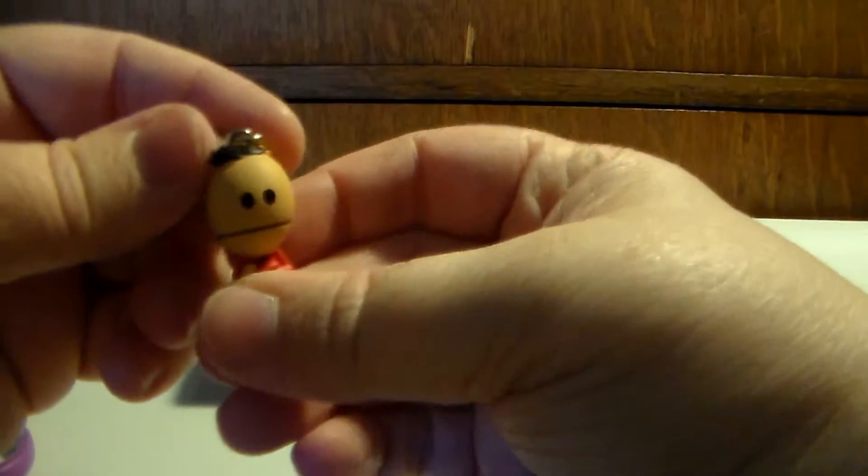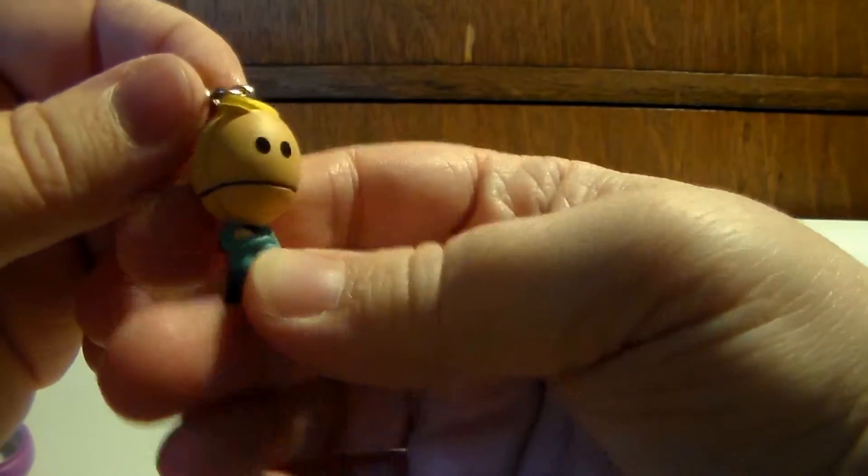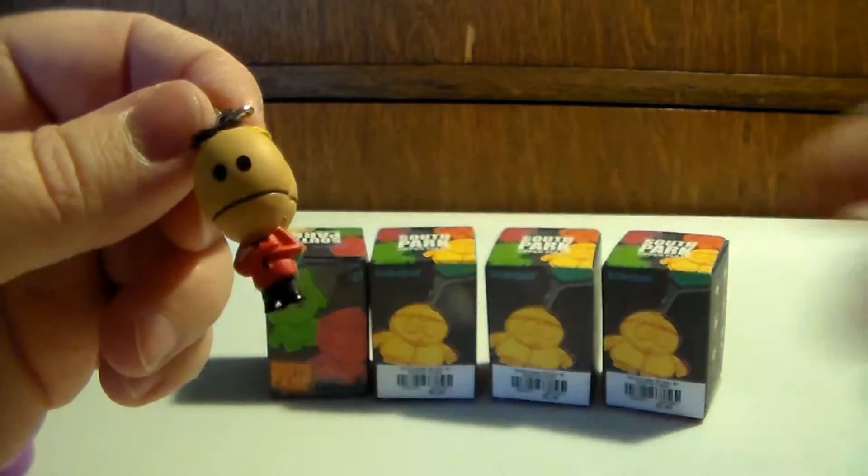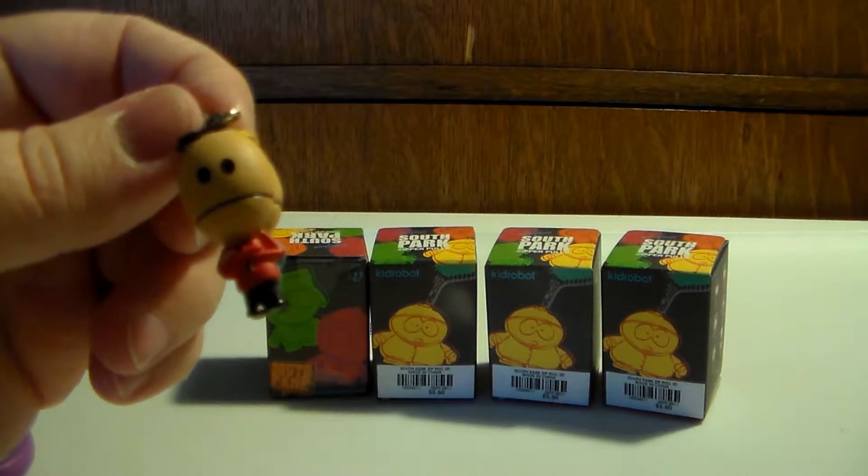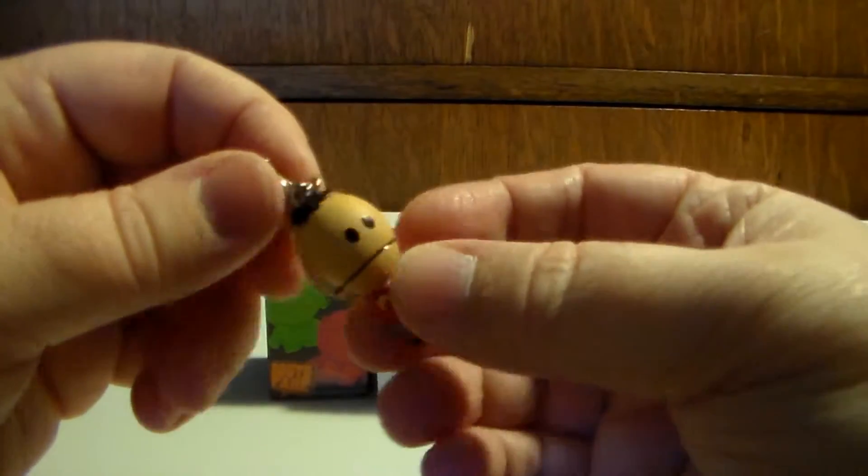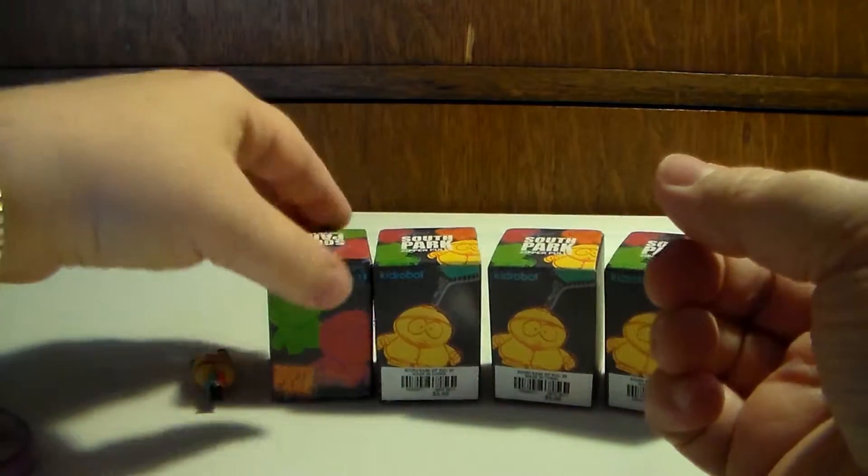We got Terrence and Philip. I know I have them, they are two out of twenty, so I know I have them.